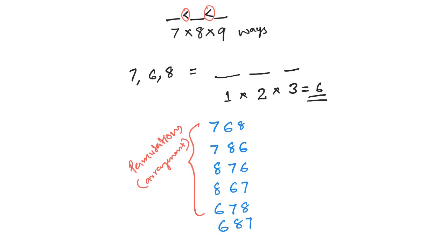If we choose the numbers 7, 6, 8 — that's just a combination, just a selection. We can explain combinations in another video. There are 6 ways we can arrange these numbers, and any combination of 3 numbers can be arranged in 6 ways.